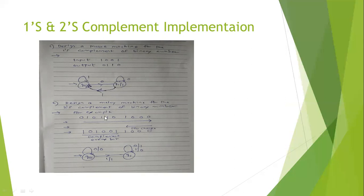Now let's see the 2s complement of a binary number. We know that for 2s complement, we perform the 1s complement and then add one to it. In Mealy machine, both input and output are associated outside the state. There is a shortcut method for finding the 2s complement of a binary number.